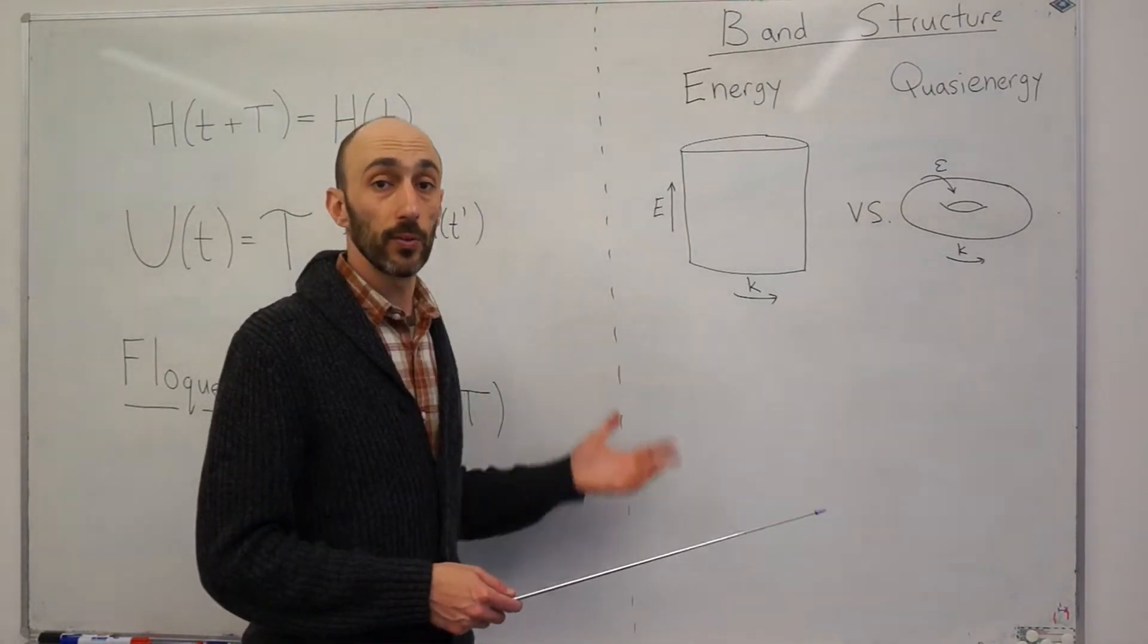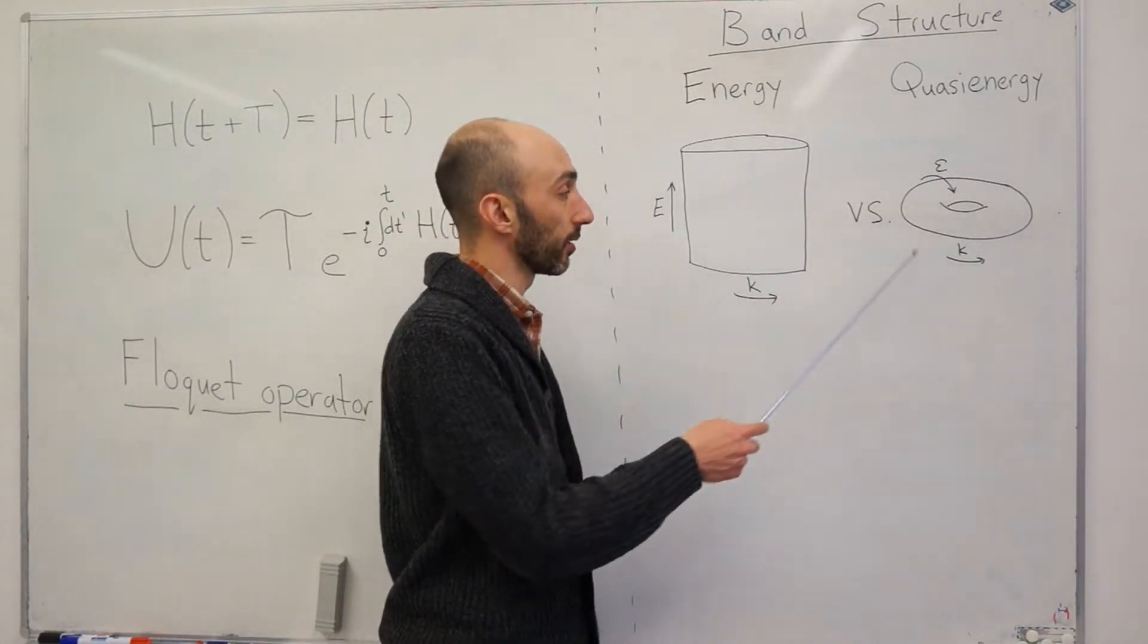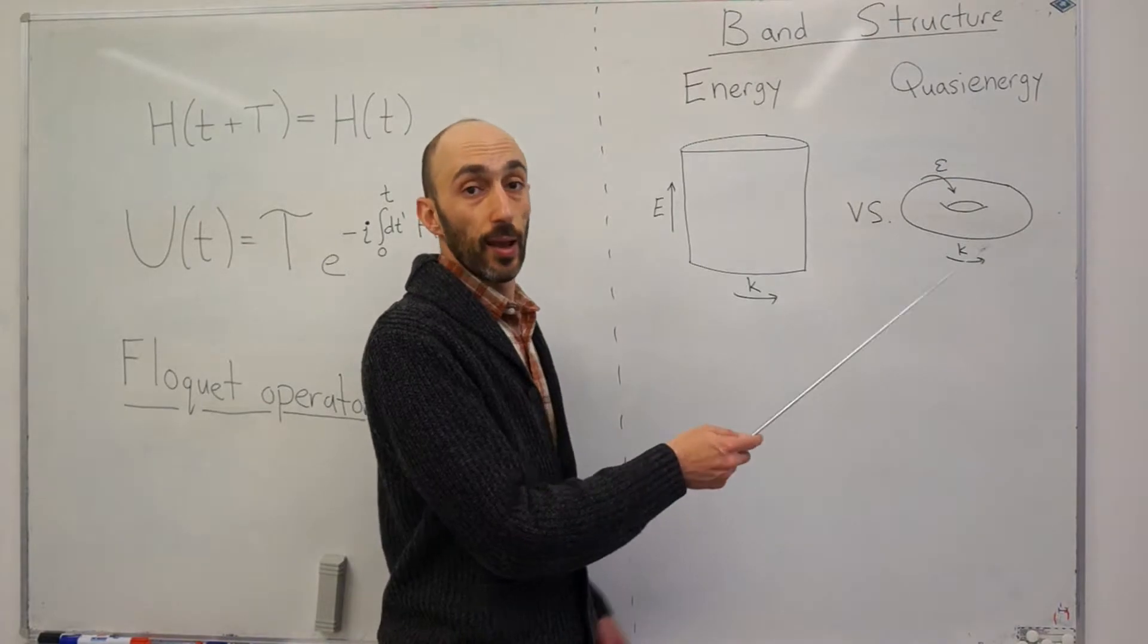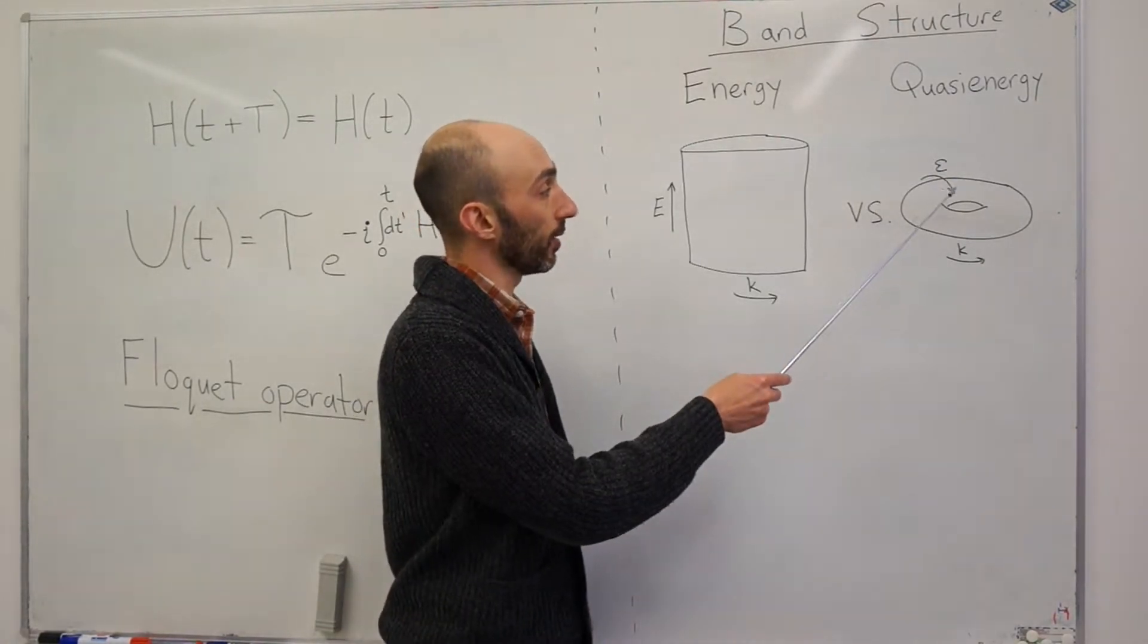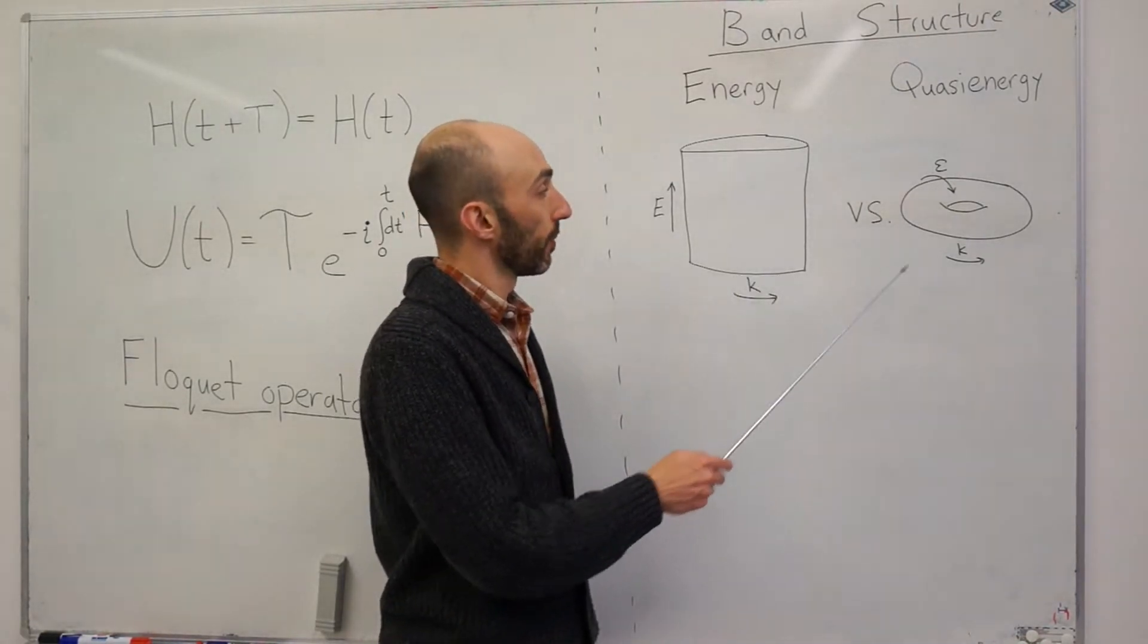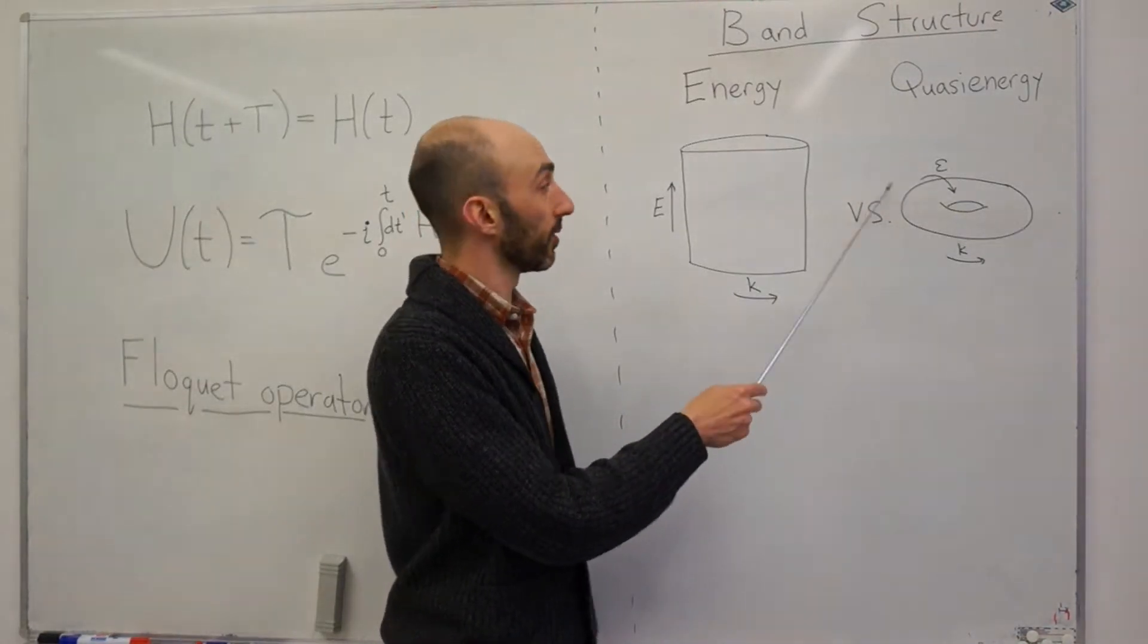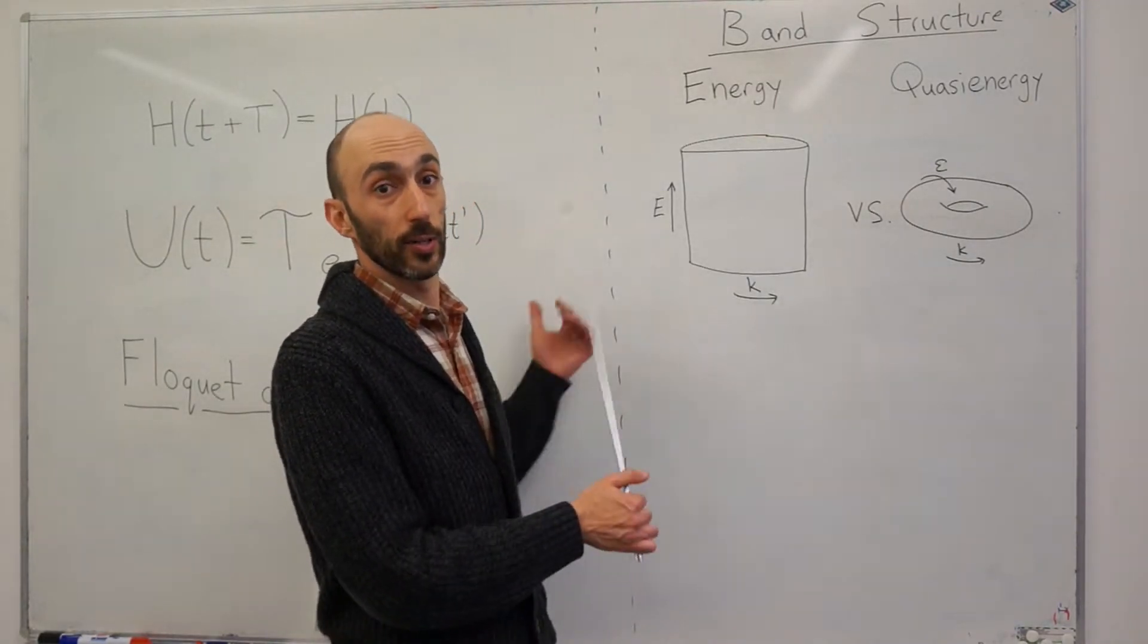In the case of a periodically driven system, now I have, well, I still have this periodic crystal momentum variable, but in addition, the energy-like variable, this quasi-energy, is itself periodic. So, the spectrum lives on a torus instead of a cylinder. Because of this different topology of the surface that the spectrum lives on, the topological classification of these systems is different as well.